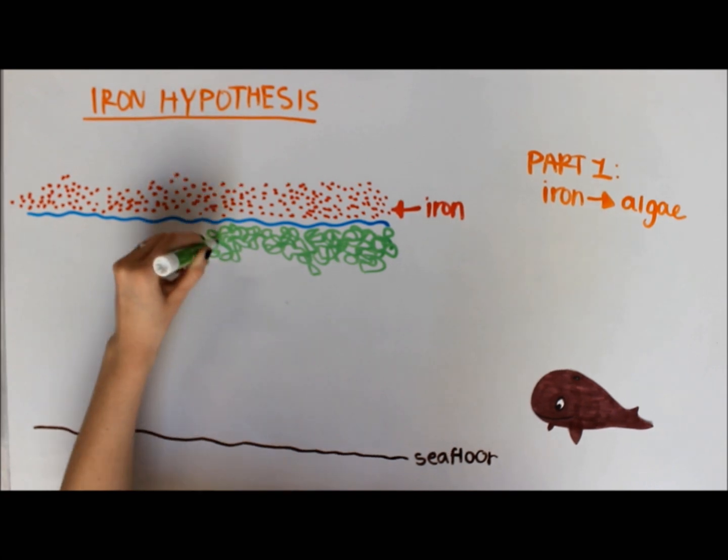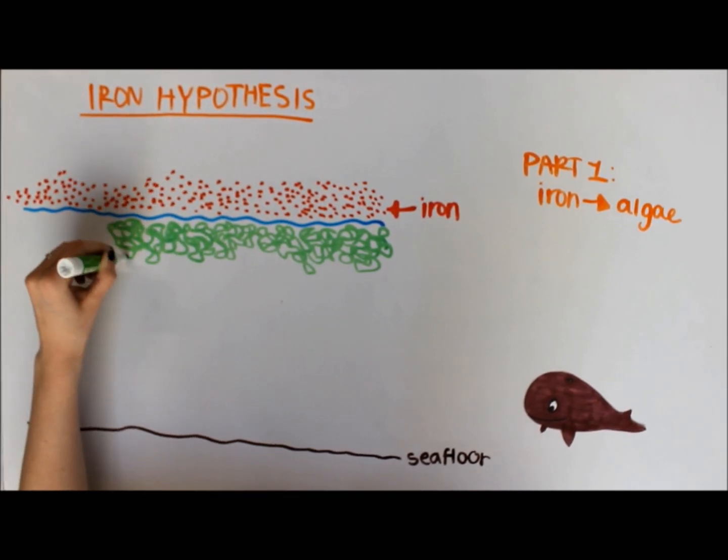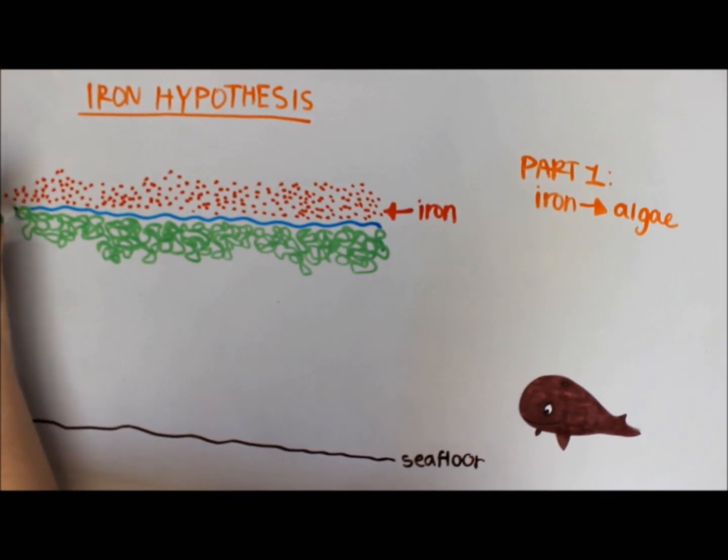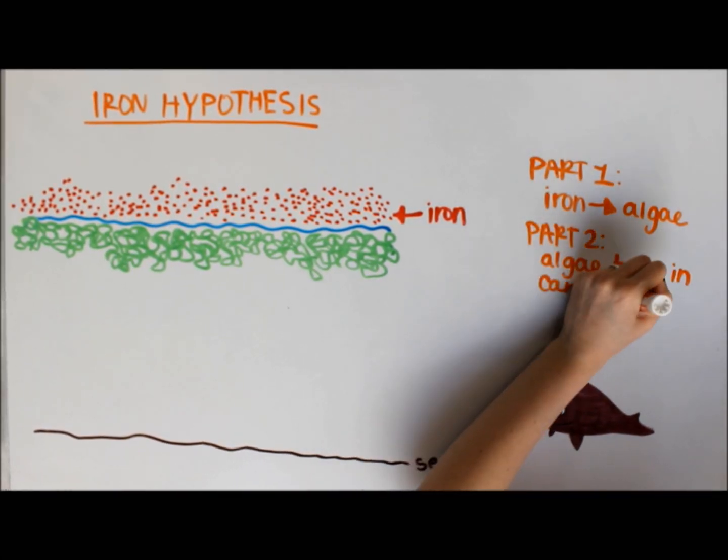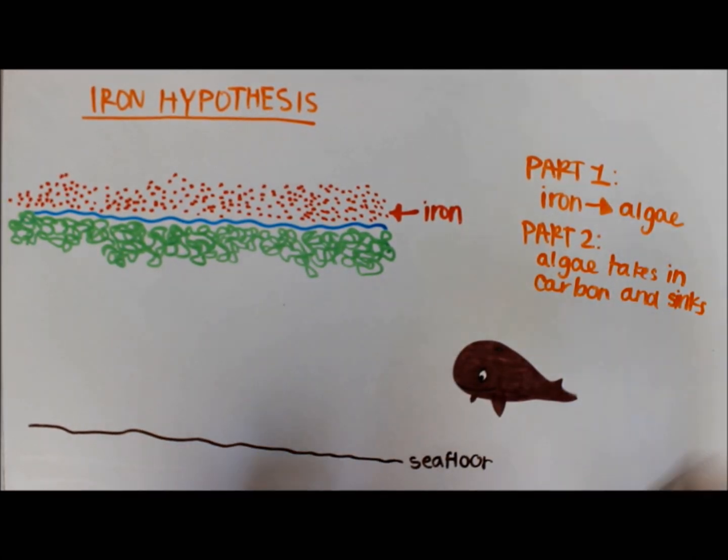Diatoms are found on ocean surfaces and use carbon to make chemical energy. The diatoms take carbon dioxide from the atmosphere. They are amongst the leading groups of plants to remove carbon from the air.